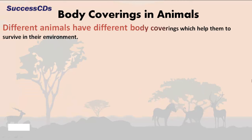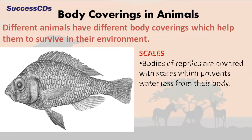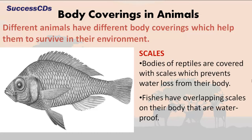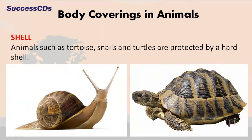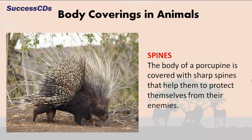Different animals have different body coverings which help them to survive in the environment. Bodies of reptiles are covered with scales which prevent water loss. Fish have overlapping waterproof scales on their body. Animals such as tortoise, snails and turtles are protected by a hard shell. Animals like sheep and bear have wool or fur that protects from the cold climate. The body of a porcupine is covered with sharp spines that help them protect themselves from their enemies.